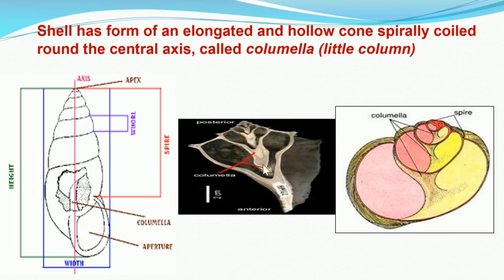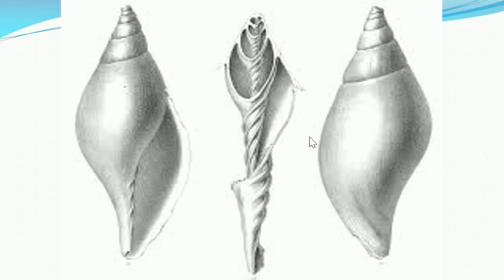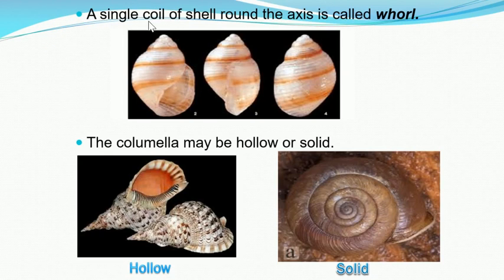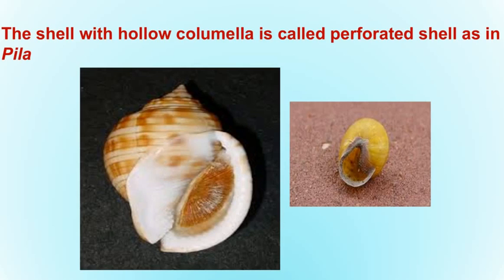Here you can see the structure of this columella or central axis. The Pila or apple snail has a single coil of shell wound around this axis in the form of a whorl, and this central axis is known as the columella. It may be hollow or solid, but in the case of Pila the columella is perforated and hollow — so remember, it is hollow in Pila.